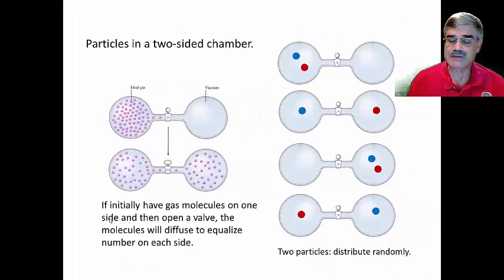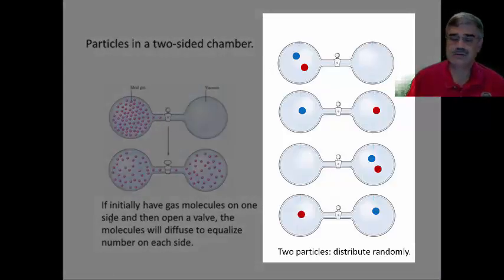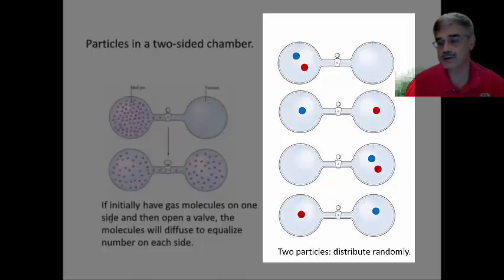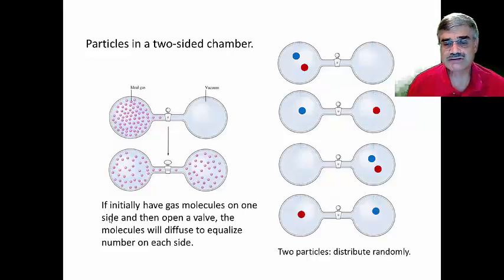But let's simplify the problem and show that this really has a statistical basis. Let's consider only two gas molecules, conveniently painted red and blue so we can keep track of them. If we start with the two gas molecules on the left side and then open the valve, and then if we were to come back and sample the apparatus every so often and check where the gas molecules are located, we might see configurations such as the second one where the blue is on one side, the red on the other, or the third where the blue and red are on the right side.